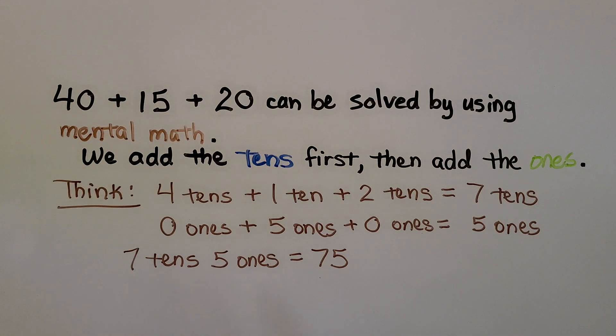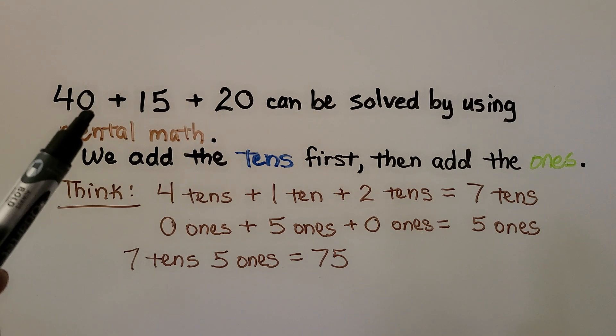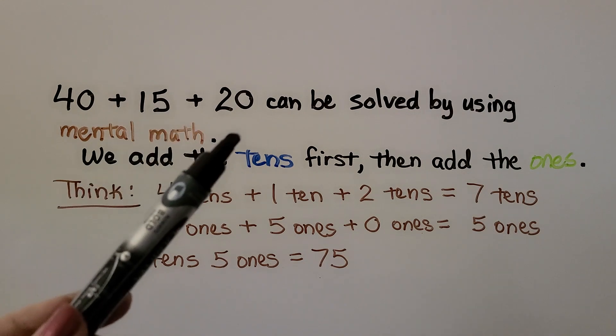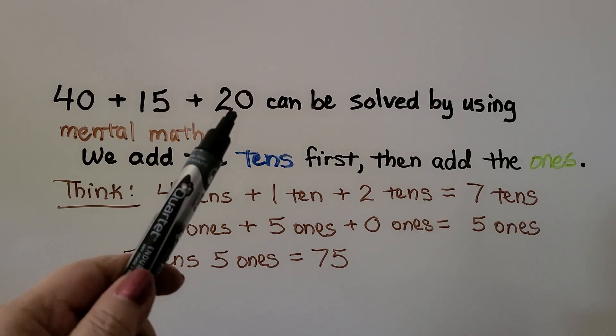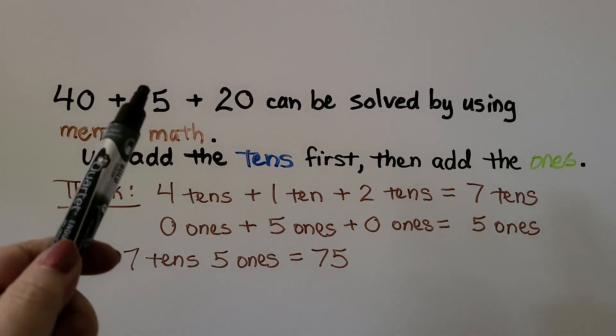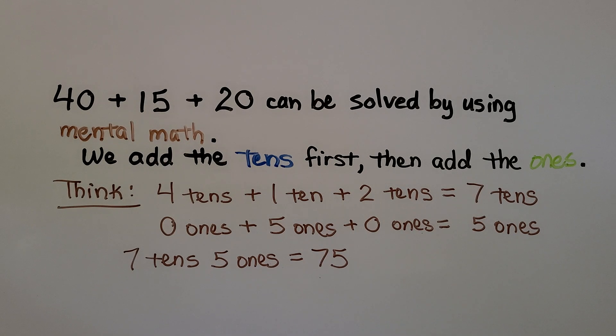40 plus 15 plus 20 can be solved by using mental math. We can add the tens first, then add the ones. We think 4 tens plus 1 ten plus 2 tens, that's equal to 7 tens. We have 0 ones, we have 5 ones, and we have 0 ones. That means we have 5 ones. 7 tens, 5 ones is equal to 75. We could also add 40 plus 20, which is 60, and 10 more is 70, plus 5 is 75. We can use mental math.